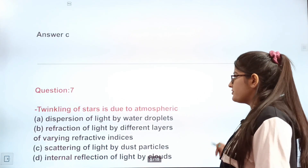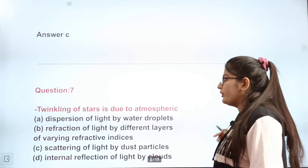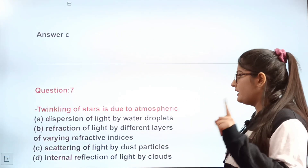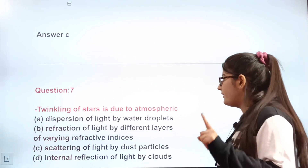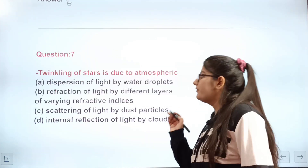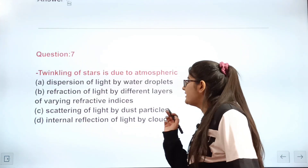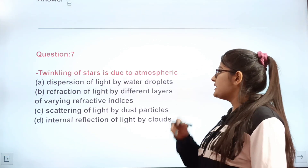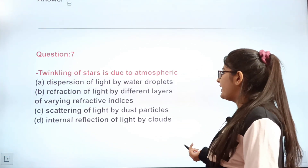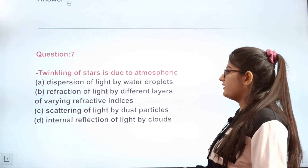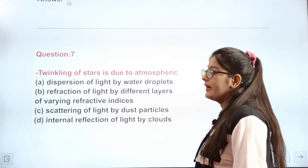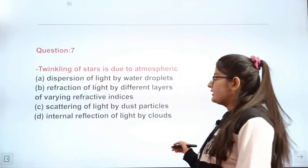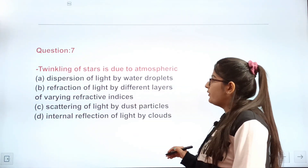Question 7: Twinkling of stars is due to atmospheric dash. Options include A dispersion of light by water droplets, and B refraction of light by different layers of varying refractive index. The correct answer is B.